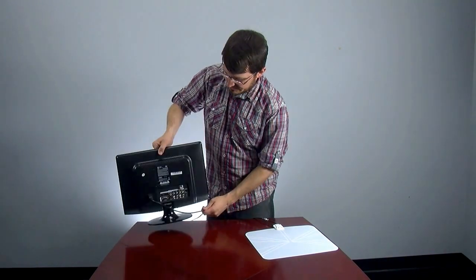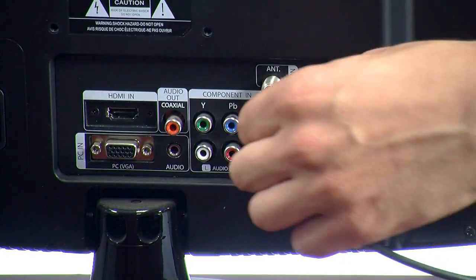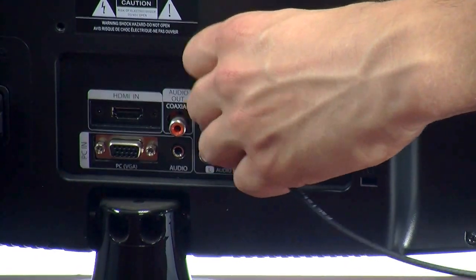And the next step is to hook the other end of the cable to the TV. To do that, you'll connect it to the input labeled ANT for antenna or cable TV.